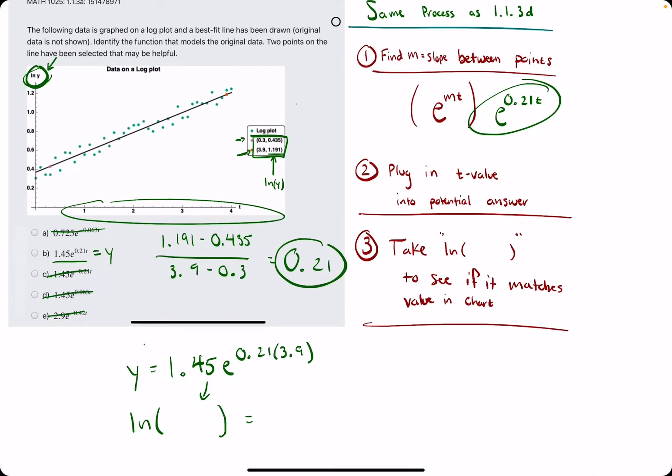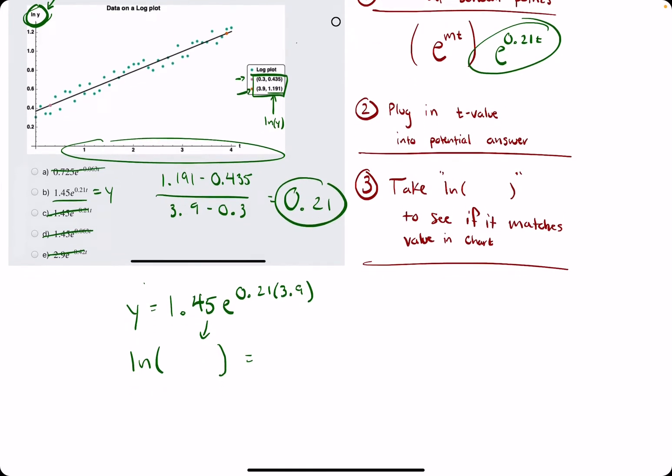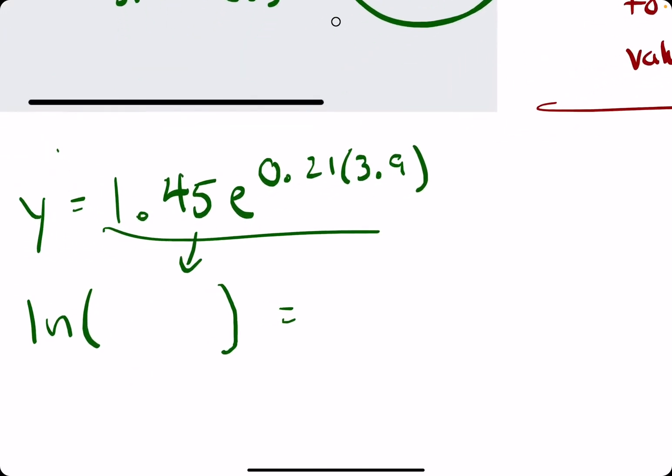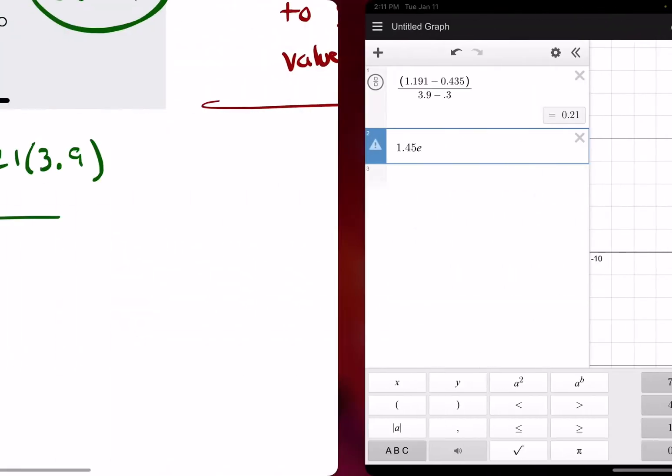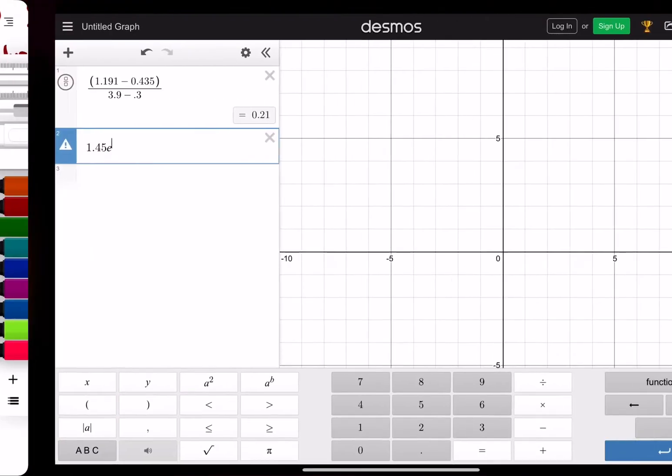In other words, we want to see if it matches the ln of y value here, or 1.191, corresponding to the t value 3.9. Without further ado, let's calculate 1.45e raised to the 0.21 times 3.9.